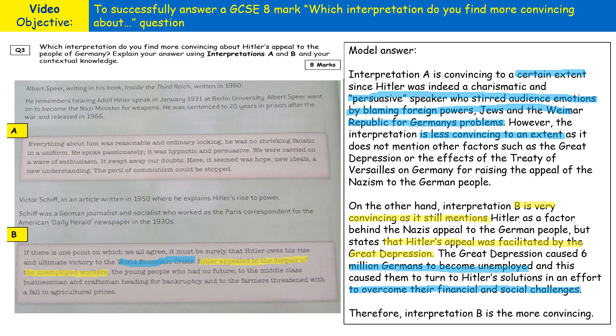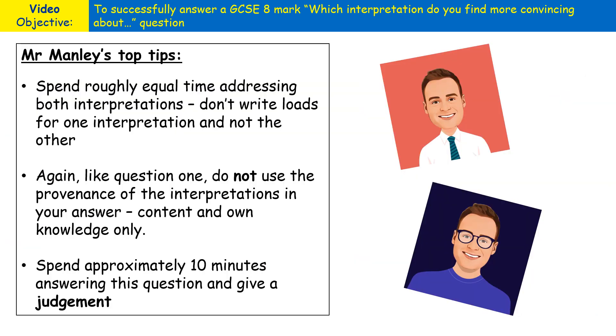The model answer rounds off with a brief judgment: 'Therefore Interpretation B is more convincing than Interpretation A.' To get seven or eight marks out of eight, it must be clear throughout your answer which interpretation you find more convincing. The best answers will signal this to the marker throughout, rather than leaving them guessing until the very end.